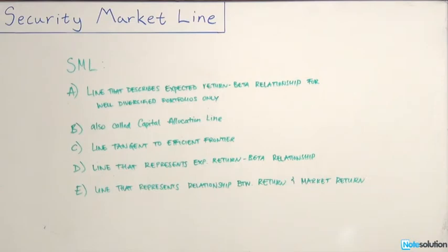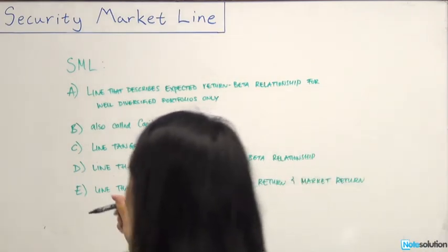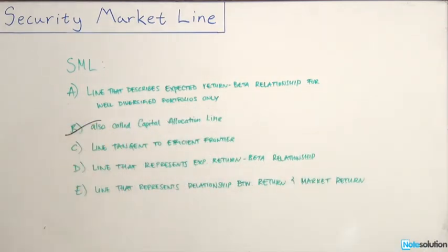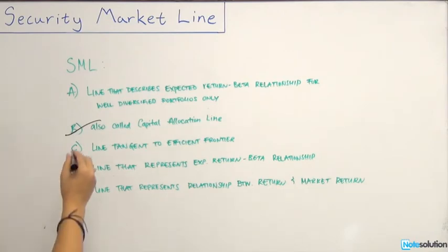B refers to the security market line as the capital allocation line. We know that is incorrect because the capital allocation line is the capital market line, so we can eliminate B right away. Next, answer C is the line that's tangent to the efficient frontier. The line that is tangent to the efficient frontier is again the capital market line, not the security market line. So we can eliminate C as well.